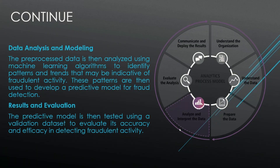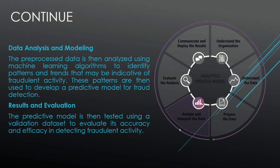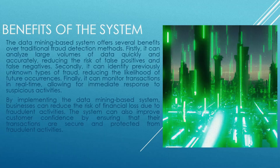The third step is analysis and modeling of data. The preprocessed data is analyzed using machine learning algorithms to identify patterns and trends that may be indicative of fraudulent activity. These patterns are then used to develop a predictive model for fraud detection. The final step is results and evaluation, where the predictive model is tested using a validation data set to evaluate its accuracy and efficiency in detecting fraudulent activity.